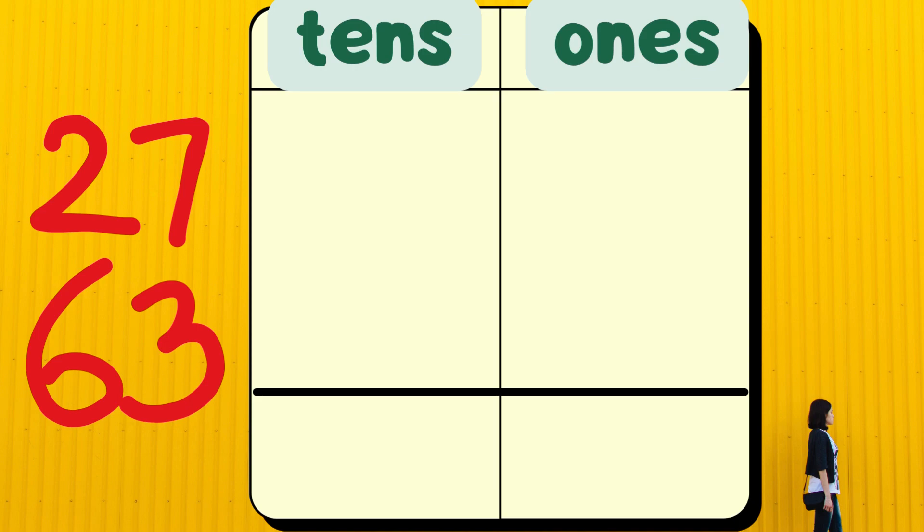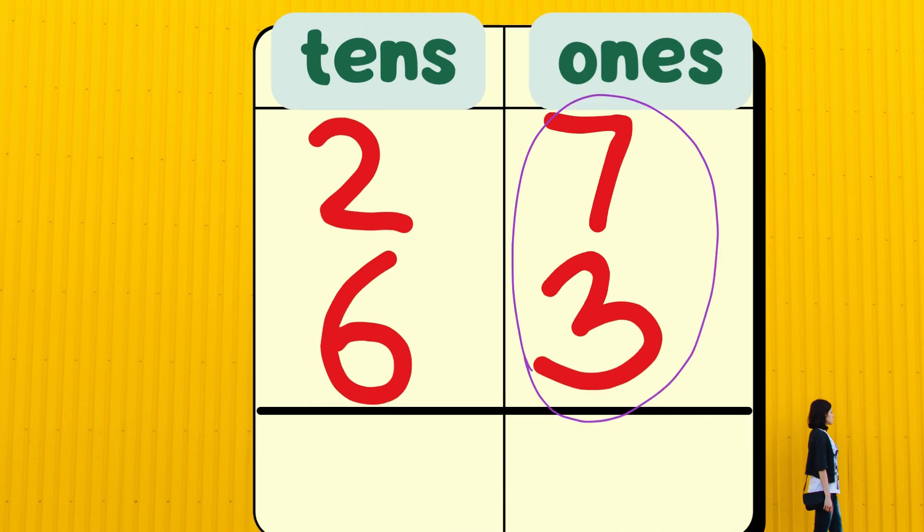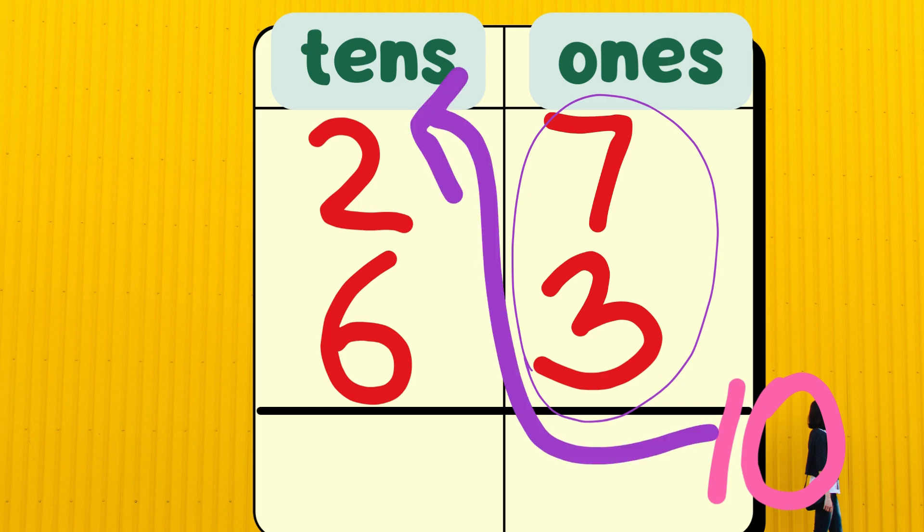Let's add 27 and 63. Write 27 and 63 in the base 10 chart. Let's add the 1s. 7 and 3 gives a sum of 10. We have 0 1s and 1 10 in 10. So we move 1 10 to the 10s place and keep 0 in 1s place.